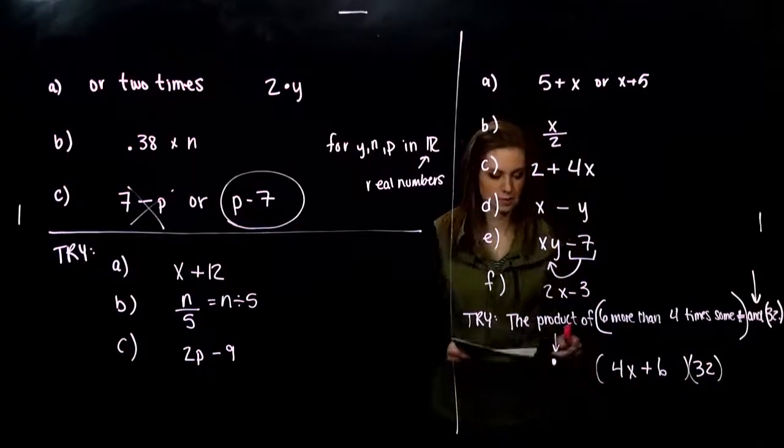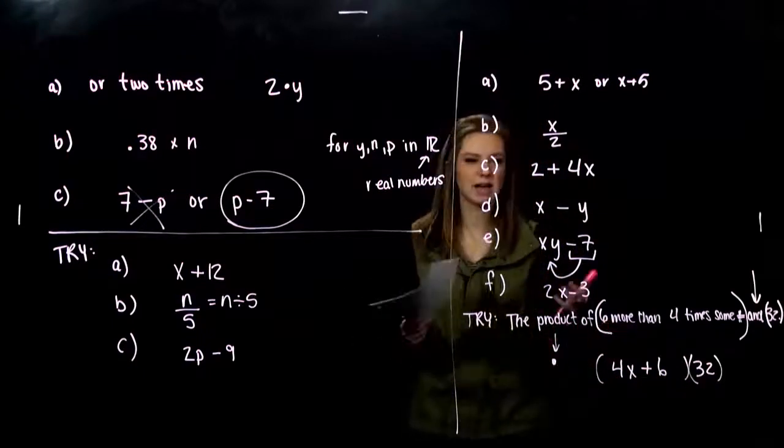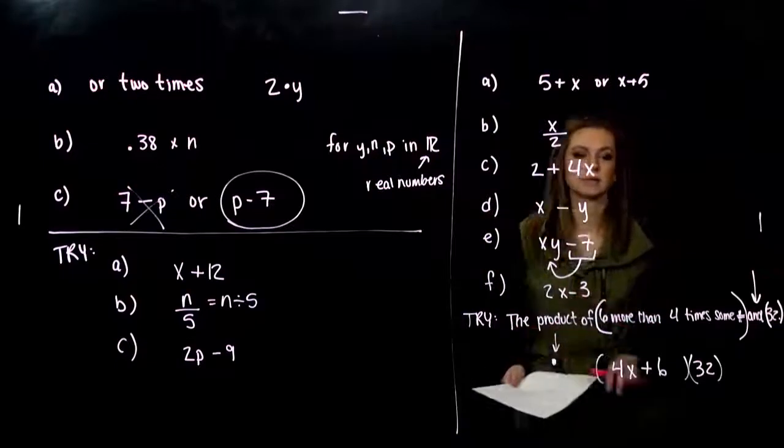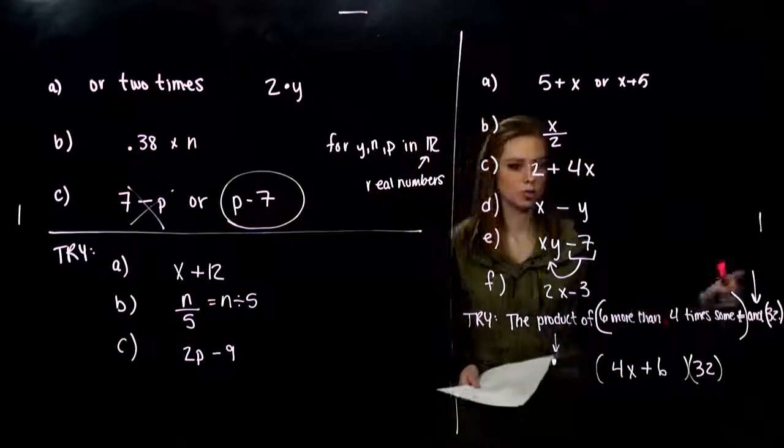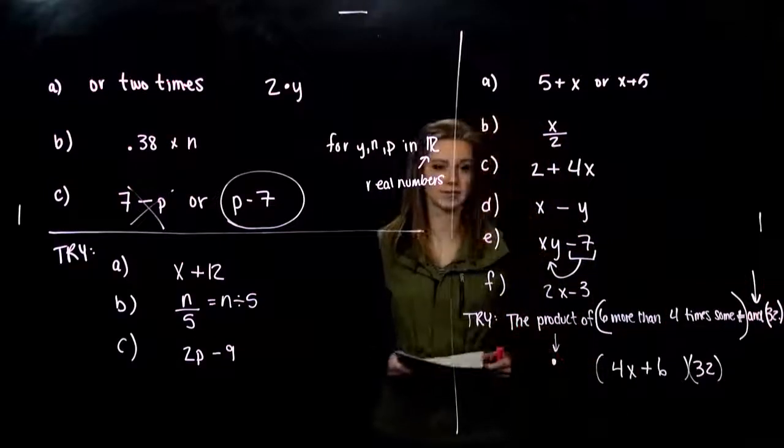And we're looking at the product of that and 32. So we got there. That's the expression we're talking about. So parse it down. Write all over the sentence. And determine what operation you're talking about, and how to break up according to whatever operation is given. That's it.